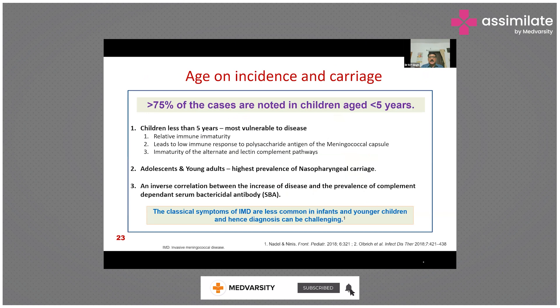Regarding age, incidence, and carriage — the prevention of invasive disease in infants is very important due to many factors. Most importantly, more than 75% of cases are noted in children less than 5 years of age. While IMD is commonly noted in young children, adolescents, and young adults, children are highly vulnerable. One reason is the relative immaturity of the immune system, particularly the under-responsiveness to pure polysaccharide antigens of Neisseria meningitidis.